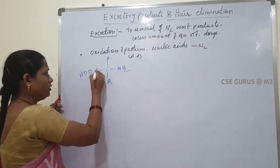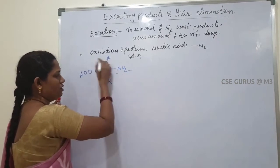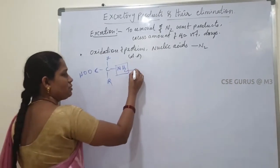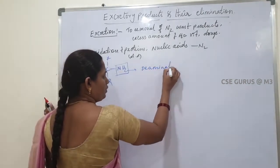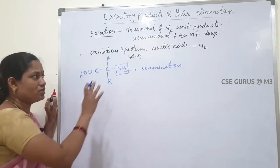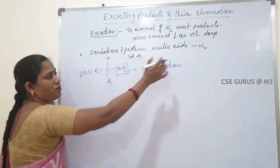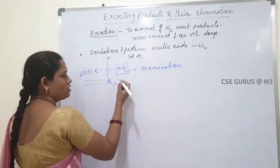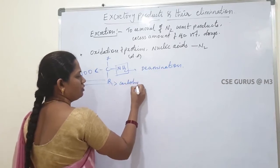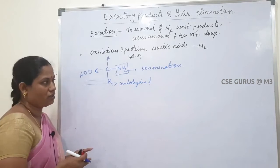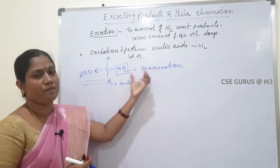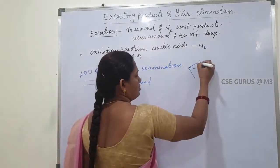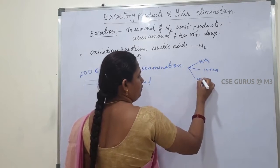For example, take one amino acid. In this amino acid, the amino group is separated from the rest of the molecule. This process is called deamination. During deamination, the nitrogenous waste product — ammonia — is separated from the amino acid. The remaining compound is converted into carbohydrate, which then produces energy. During this deamination process, nitrogenous waste products are released in our body.